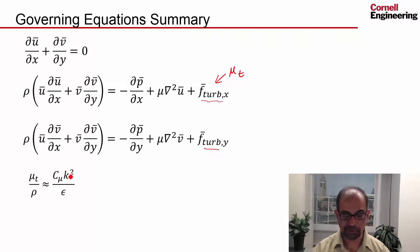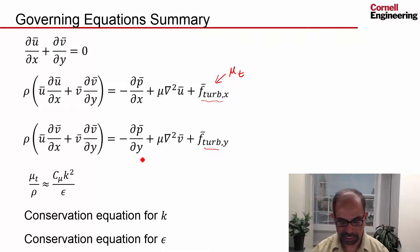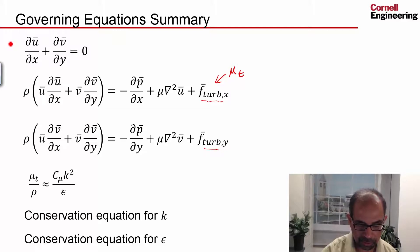The eddy viscosity is calculated from k and epsilon. And we have a conservation equation for k that's a partial differential equation that looks similar to that, as well as a conservation equation for epsilon. So we have one, two, three, four, five.